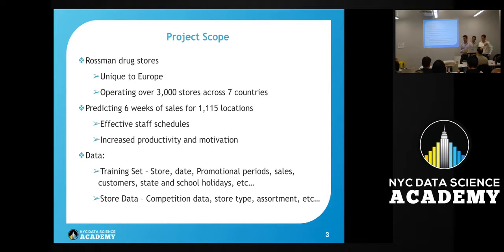For project scope, Rossmann is a drugstore unique to Europe. They have about 3,000 stores across 7 countries. The whole idea was to predict 6 weeks of actual sales across 1,115 locations. The idea was to allow managers to schedule staff appropriately to increase productivity and motivation.